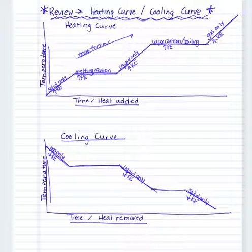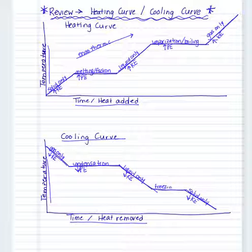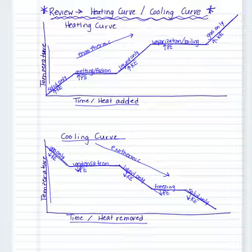Our two phase changes are again the two flat lines. The first is condensation, which is when we go from gas to liquid, with a decrease in potential energy. The second is freezing, or solidification, from liquid to solid — again a decrease in potential energy. This whole cooling curve represents an exothermic process, releasing heat as we go from gas to liquid to solid.